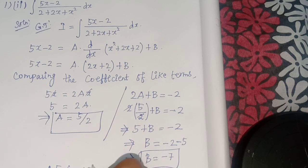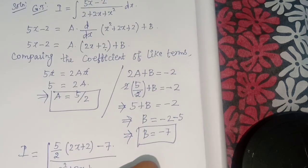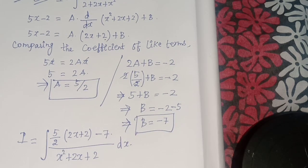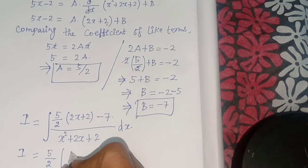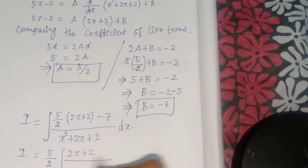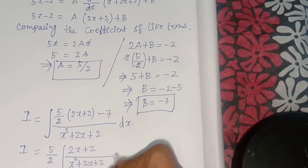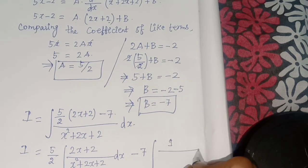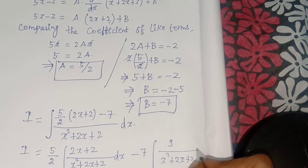Substituting a equals 5 by 2 and b equals minus 7 back into the integral: I equals the integral of (5/2 times (2x plus 2) minus 7) divided by (x squared plus 2x plus 2) dx. This splits into 5/2 times the integral of (2x plus 2)/(x squared plus 2x plus 2) dx, minus 7 times the integral of 1/(x squared plus 2x plus 2) dx.